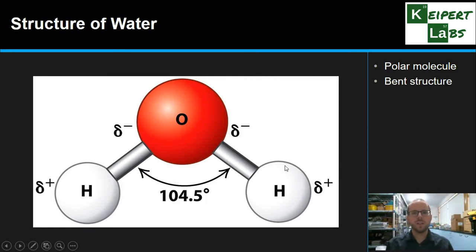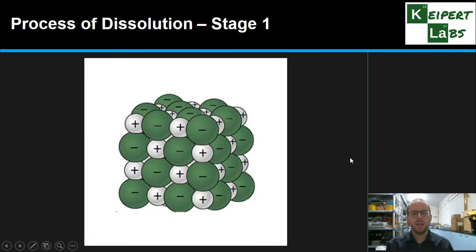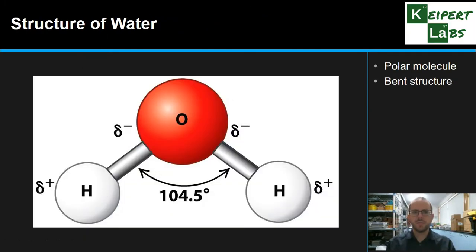It has a bent structure, this 3D shape, that it's not in a straight line. It is at this kind of an angle with 104.5 degrees between these two bonds. And this aspect of the structure of water is going to be quite critical when we think about what happens next. So it's got positive and negative ends due to its bent structure.